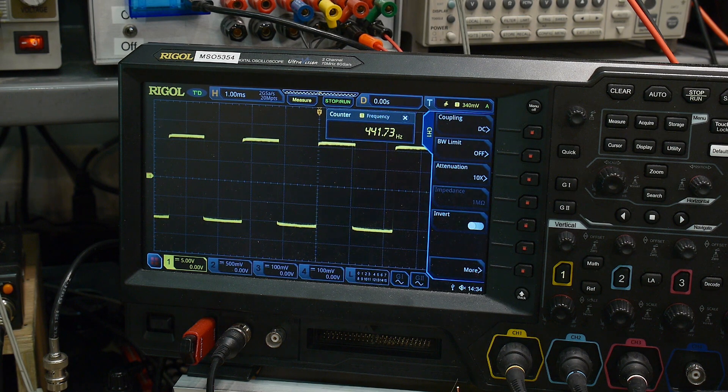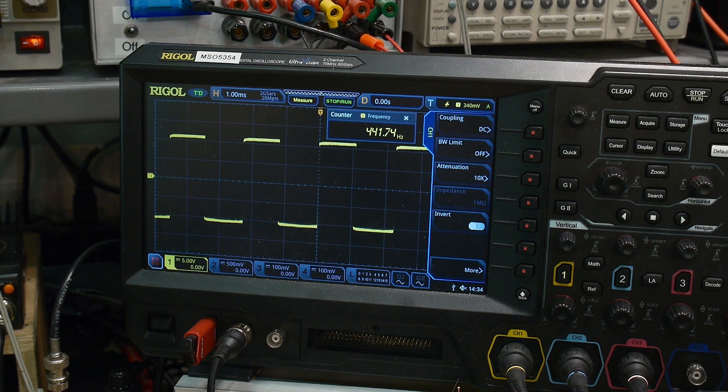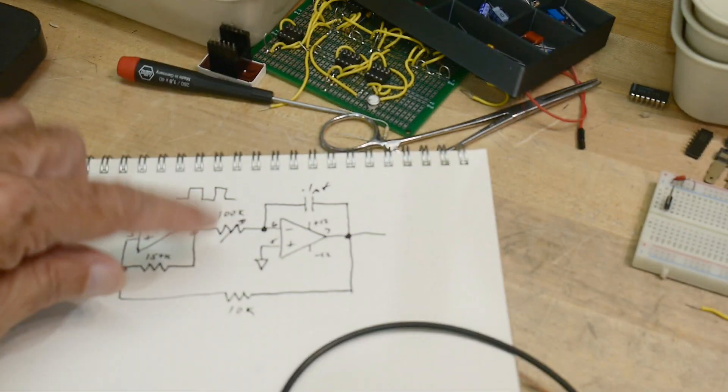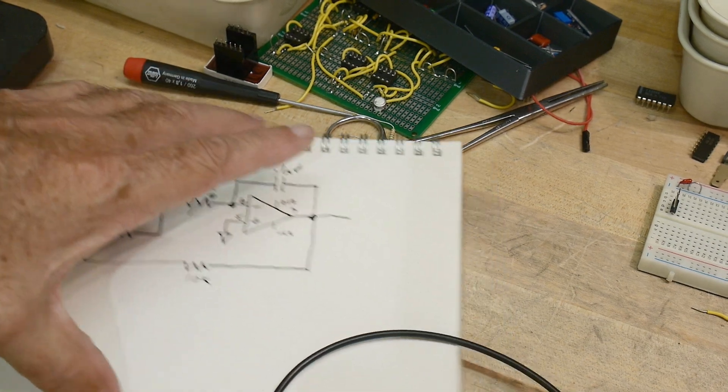There we go—five volts per division. So it's going up to 12 volts and then down to 12 volts and up to 12 volts and down to 12 volts, which is what you would expect from a comparator, right? It'll go whack, whack, whack, whack.